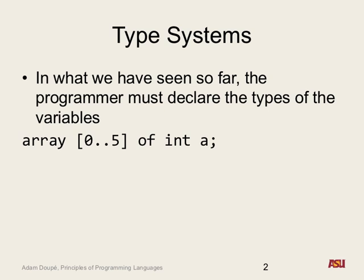This is an anonymous type, a type with no name. We are not declaring that there is a type called array 0 to 5 of int — this is a variable declaration. This is a type constructor: we are constructing a new type of array based on some of our basic types. So why are the names of types important?